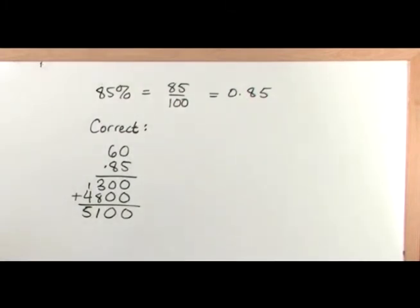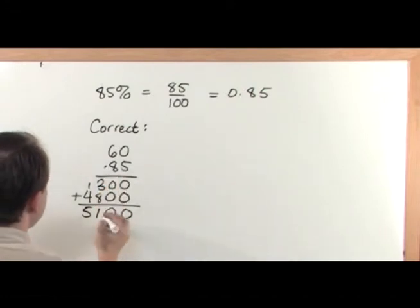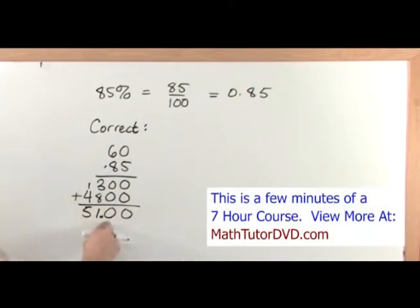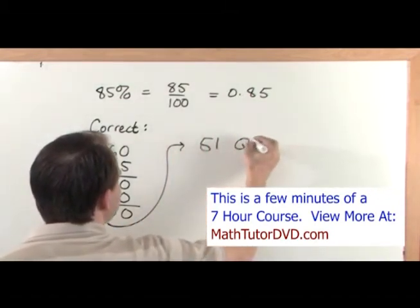So I've got 5, 1, 0, 0. I need to figure out where to put this decimal. And I have a decimal here with two digits after, so in the final answer I need to have two digits after the decimal. Notice that these digits after the decimal are just 0. So what this means is I got 51 questions correct.